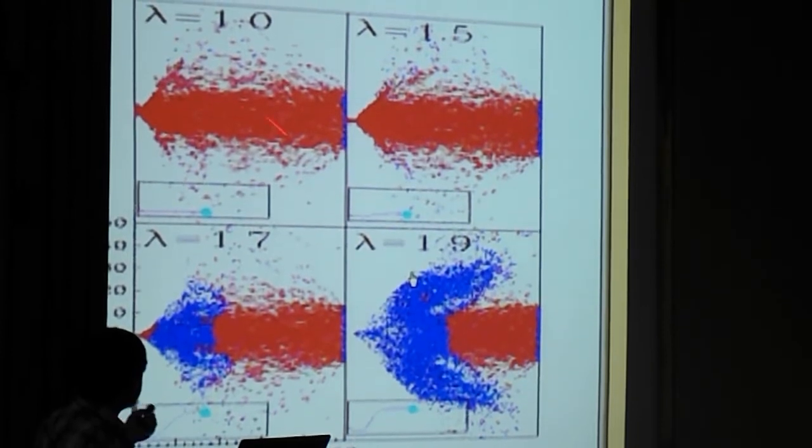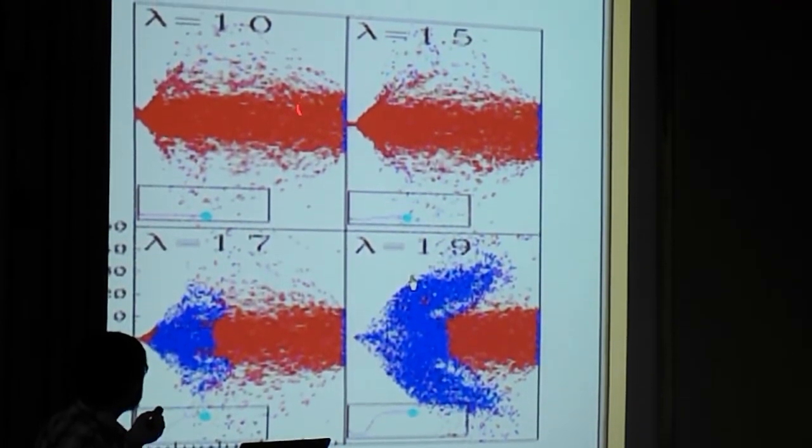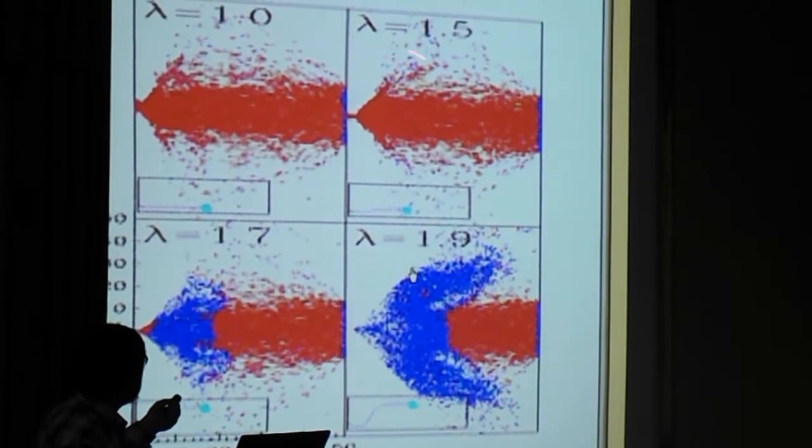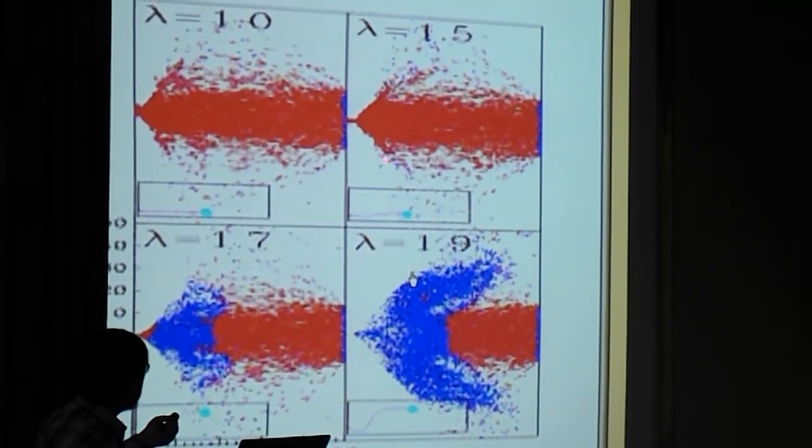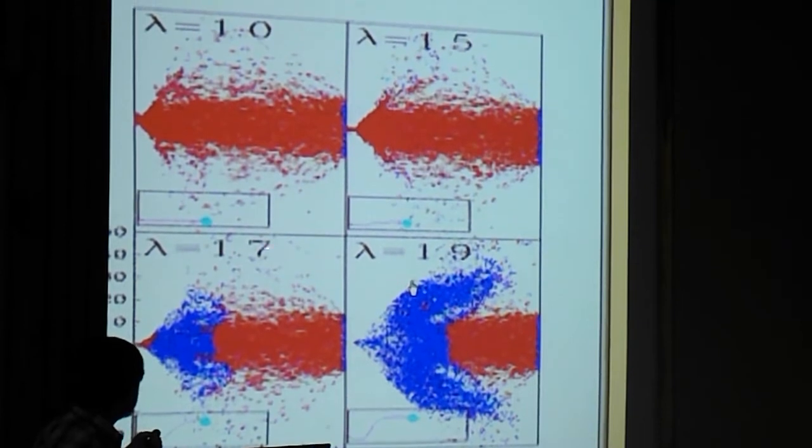This is very low angular momentum, this is no boundary layer, matter is supersonic everywhere, red is supersonic, blue is subsonic, and if we add angular momentum, a little bit more, still totally supersonic, then we add a little bit more, 1.7.